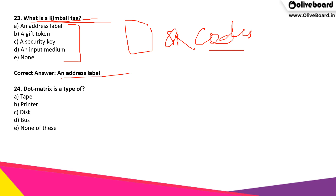Dot matrix is a type of — the correct answer is option B, which is printer. So it is a type of printer.